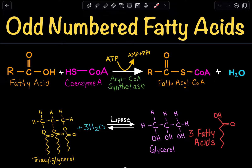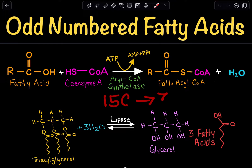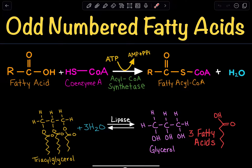We face a problem when we have odd-numbered fatty acids, because in odd-numbered fatty acids, when we are undergoing our final round of beta-oxidation, that final product is going to have three carbons rather than two. So if we had a 15-carbon fatty acid and broke it down via beta-oxidation, in the final round it would be left with three carbons, and this three-carbon molecule is called propionyl-CoA. Here we're going to go over how we break down propionyl-CoA.